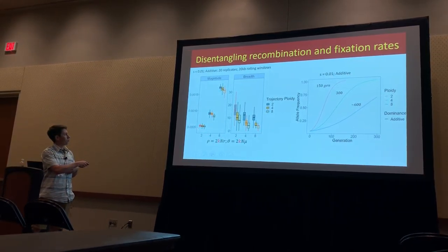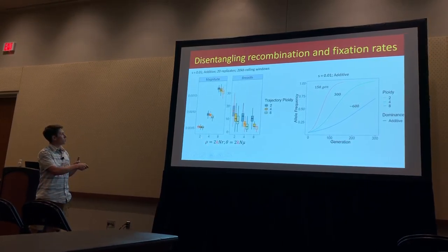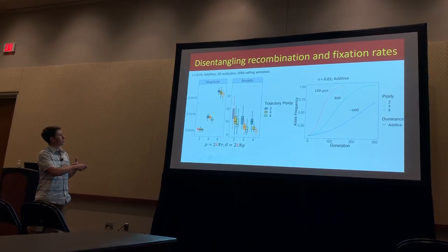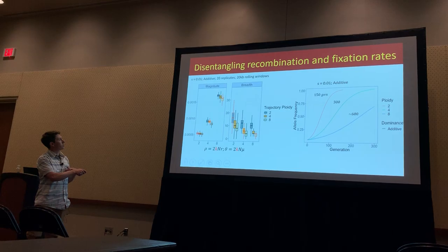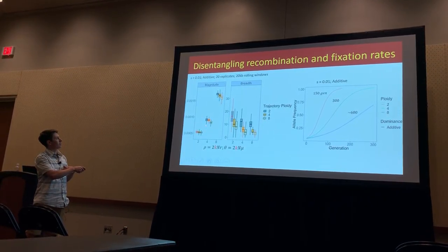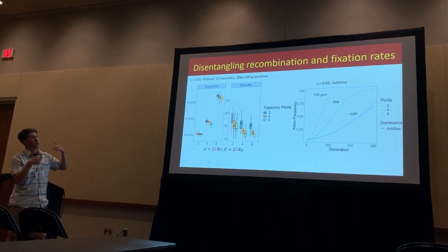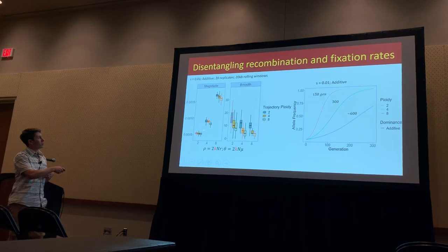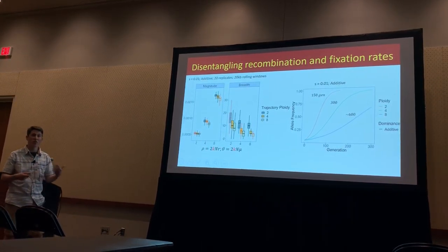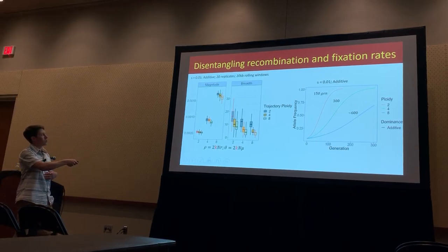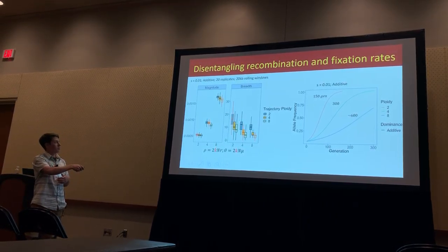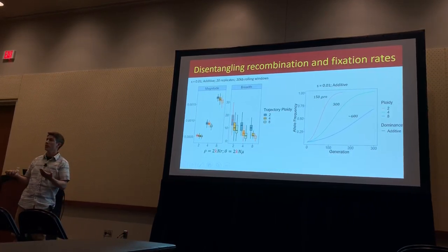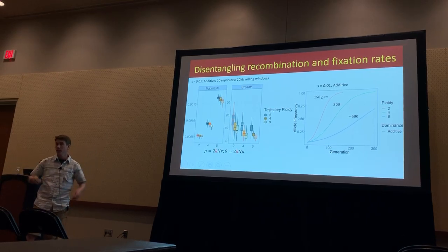What I'm showing highlighted in red is the data from the previous slide, where the ploidy used matches the ploidy used to calculate the trajectory. Looking across different trajectory ploidies, you can see that the magnitude is largely due to starting at a higher baseline diversity with higher ploidies. But when it comes to the breadth of the dip in diversity, what seems to be driving it is that in lower ploidies, you just sweep through the population a lot faster, and that's what determines how broad your signal is.